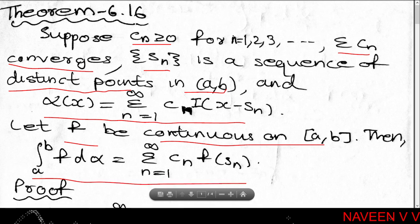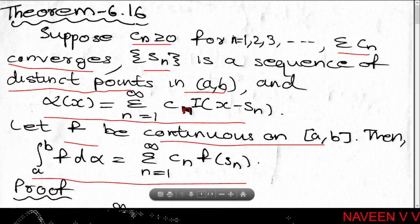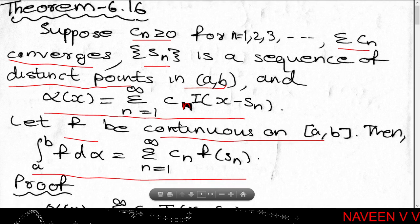Here cₙ are non-negative real numbers, Σcₙ is a convergent series, {sₙ} is a sequence of distinct points in (a,b), and α(x) = Σ(n=1 to ∞) cₙ · I(x - sₙ) for each x in [a,b]. The function f is continuous on [a,b], and we need to prove that ∫(a to b) f dα = Σ(n=1 to ∞) cₙ · f(sₙ).